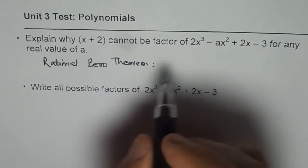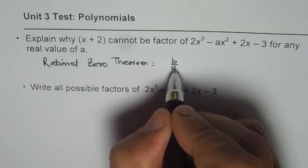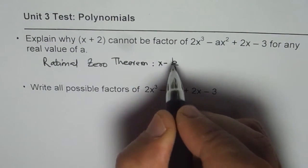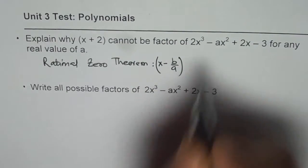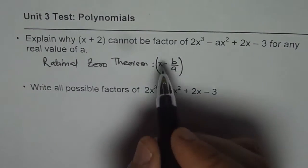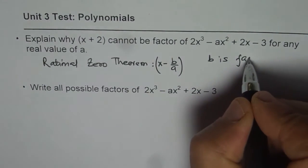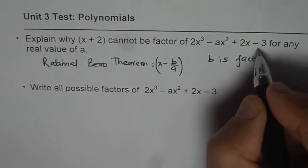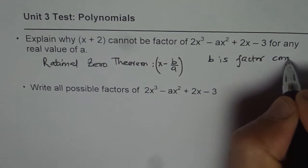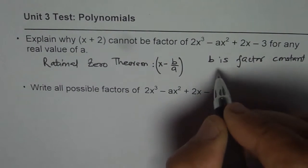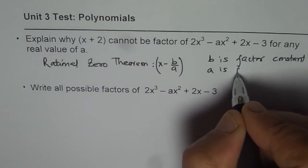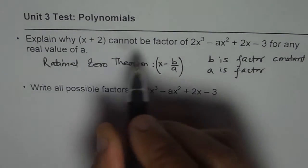That is, x minus b over a is a factor of a polynomial if and only if b is a factor of constant, which is 3 in this case, and a is a factor of leading coefficient.